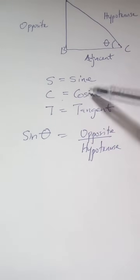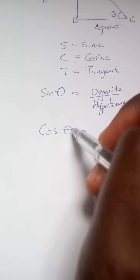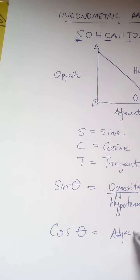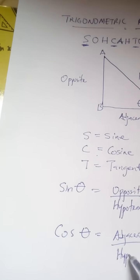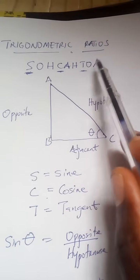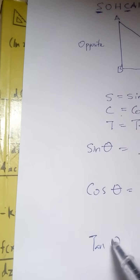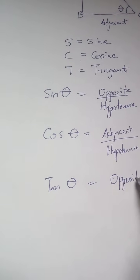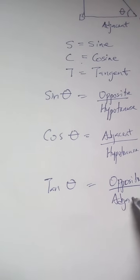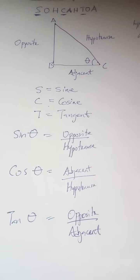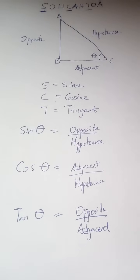The next letter, C, is for cosine. Cos theta is adjacent over hypotenuse — write it: adjacent over hypotenuse. Then T is for tangent. Tan theta is opposite over adjacent.